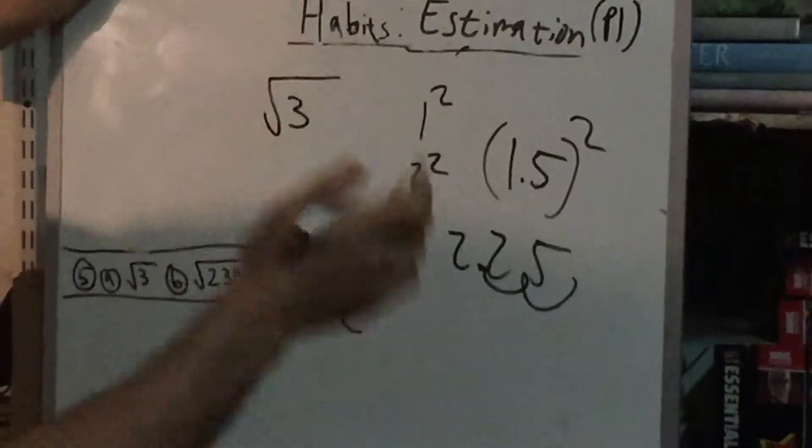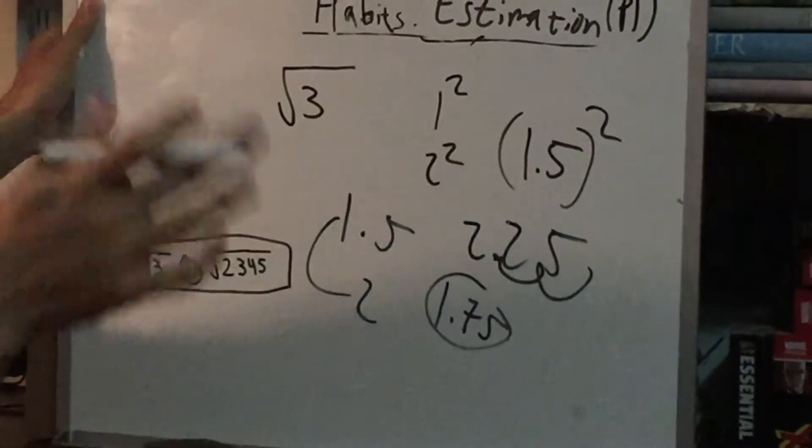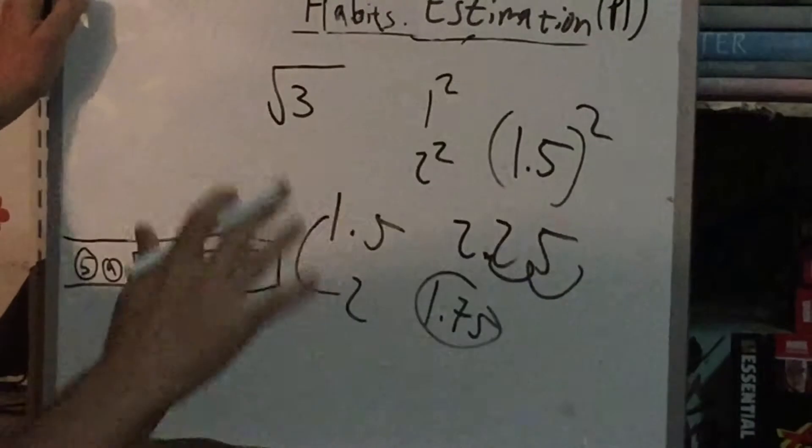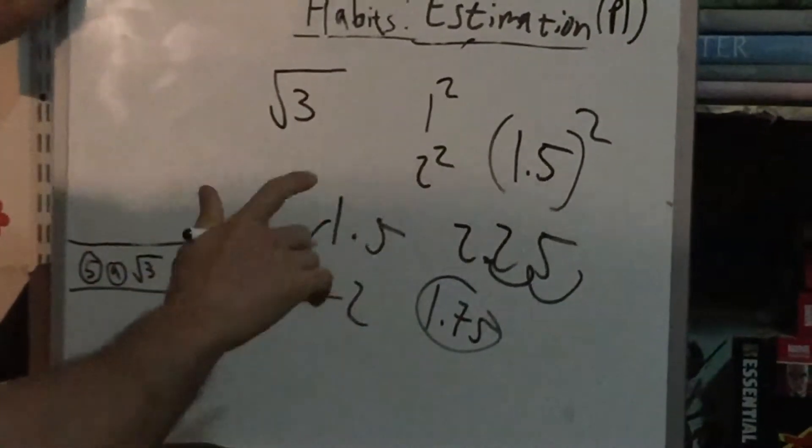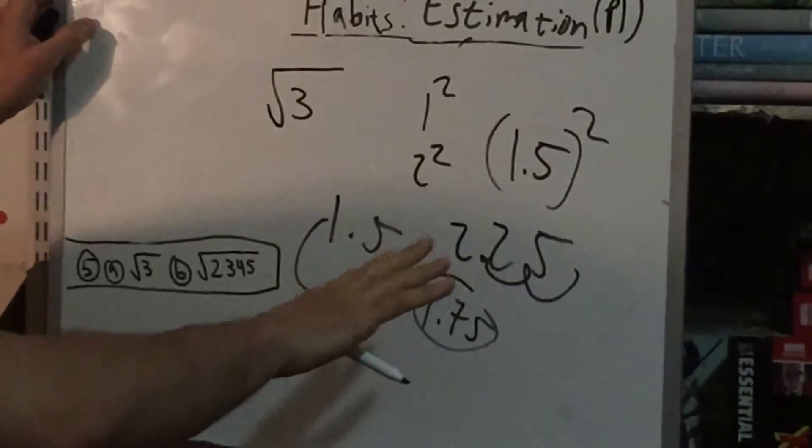Now we could keep going and say let's try 1.75 and keep getting closer and closer. I'll leave it here depending on how accurately you want it. I just wanted to show you that you can do that. That's one way of doing it.